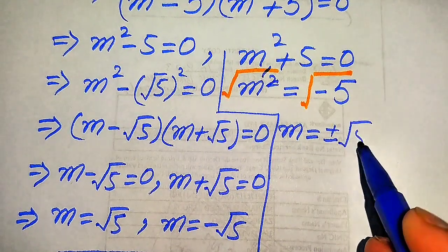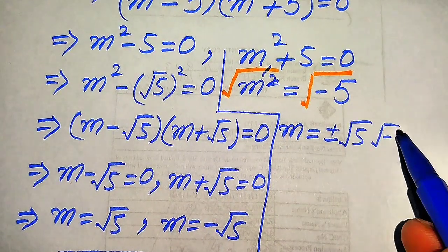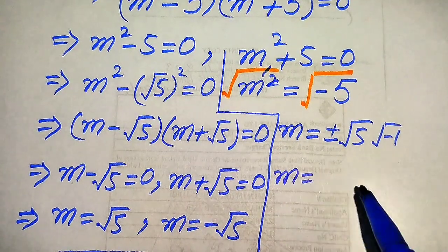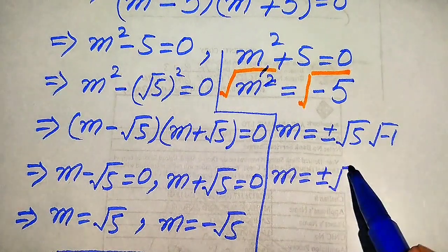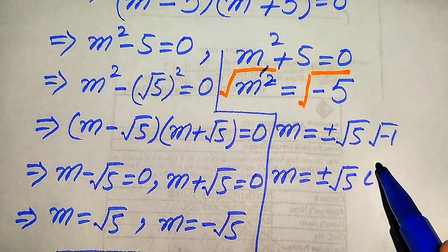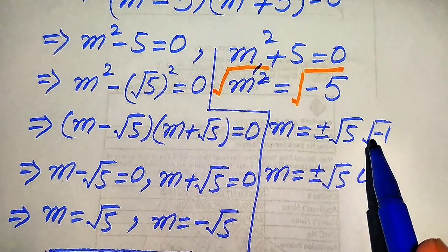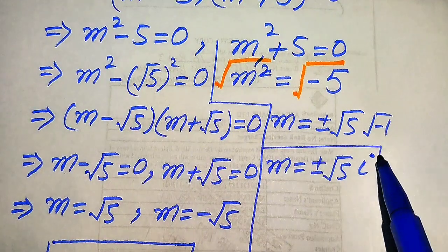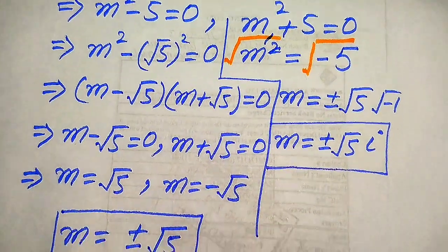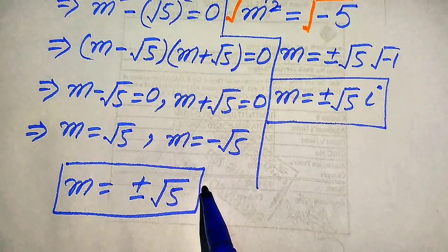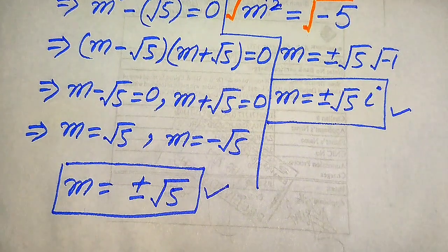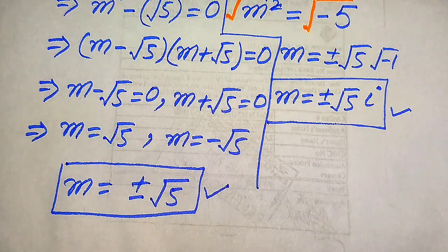We write this as square root of 5 times square root of minus 1. Since the square root of minus 1 equals iota, we get m equals plus or minus square root of 5 times iota. These are the other two complex roots of the given equation. Finally, the four roots of the given equation are two real roots m equals plus or minus square root of 5, and two complex roots m equals plus or minus i square root of 5. Thank you for watching this video, please subscribe to my channel for more exciting videos.